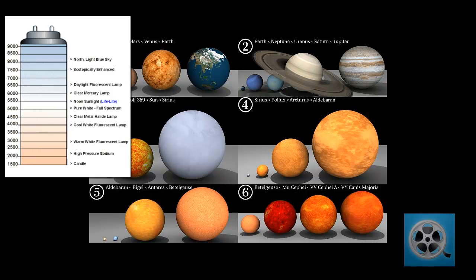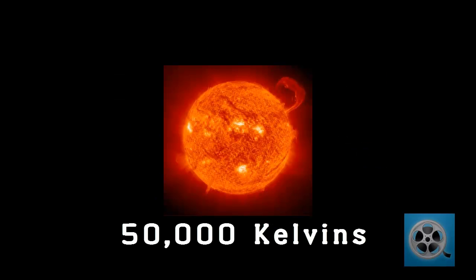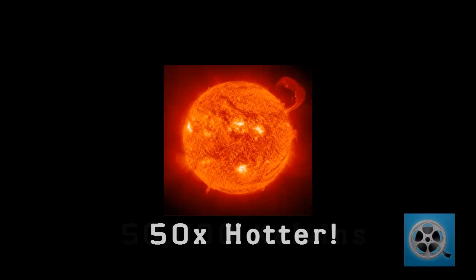Astronomers measure the temperature of a star in Kelvin, and some can reach up to 50,000 kelvins, or 2,285,000 degrees Fahrenheit. That is more than 50 times hotter than the Sun.